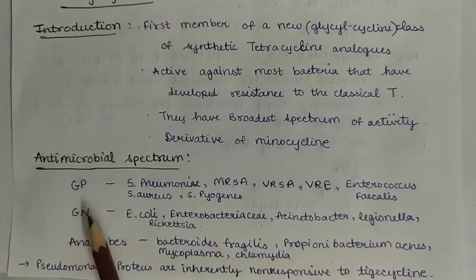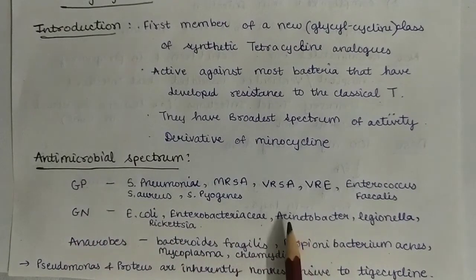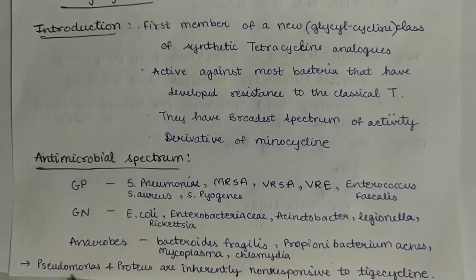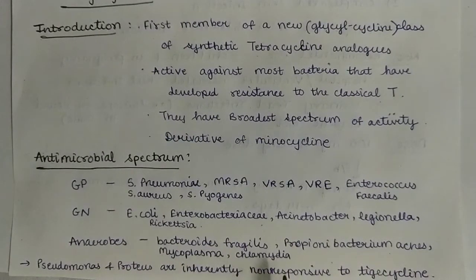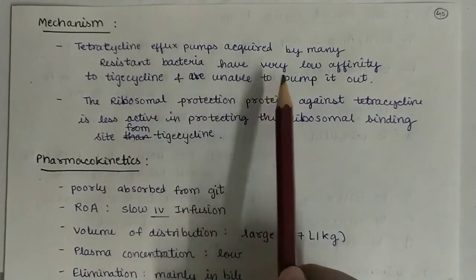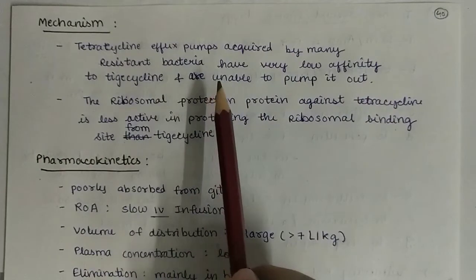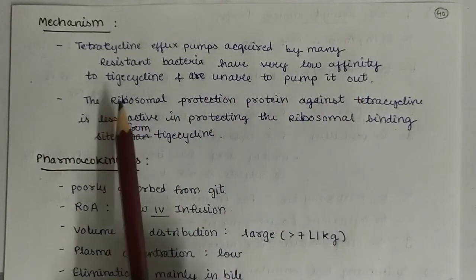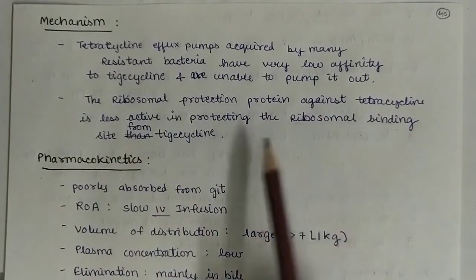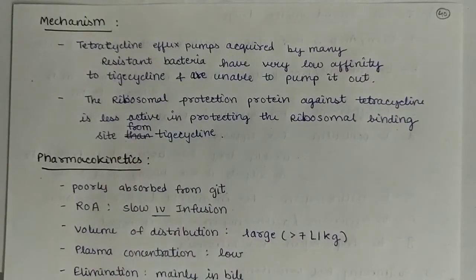From gram-negative organisms: E. coli, Enterobacteriaceae, Acinetobacter, Legionella, and Rickettsia. From anaerobes: Bacteroides fragilis, Propionibacterium acnes, Mycoplasma, and Chlamydia. Pseudomonas and Proteus are inherently non-responsive to tigecycline. Mechanism: tetracycline efflux pumps acquired by many resistant bacteria have very low affinity to tigecycline and are unable to pump it out. The ribosomal protection protein against tetracycline is less active in protecting the ribosomal binding site from tigecycline.